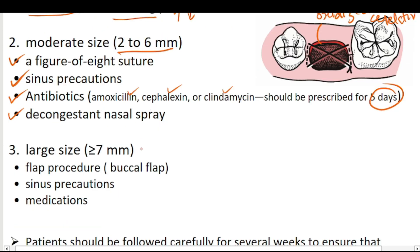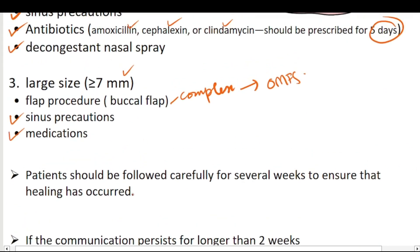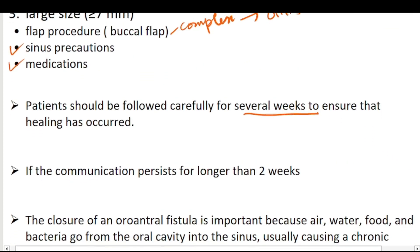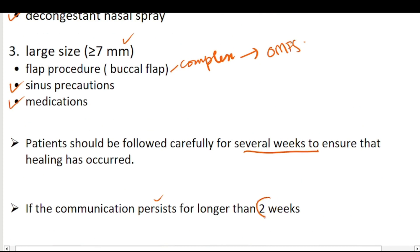If communication is large — equal to or more than 7 mm — then a more complex procedure is performed: the flap procedure, such as a buccal advancement flap. This is a complex procedure and we will refer this patient to an oral and maxillofacial surgeon. We will maintain sinus precautions and medications for several weeks to ensure healing. If communication persists for more than two weeks, we will also refer the patient to an oral and maxillofacial surgeon.